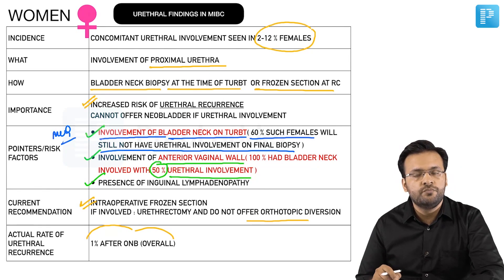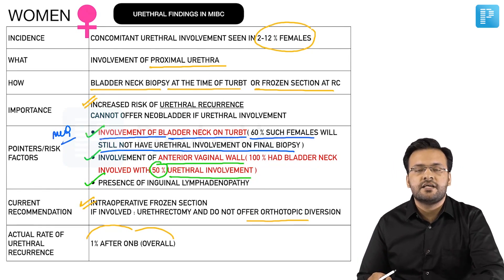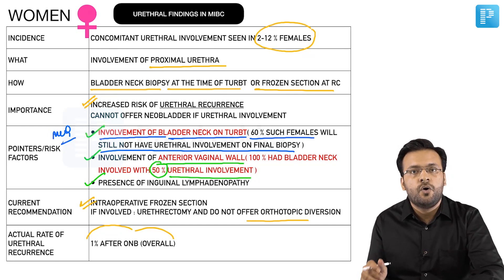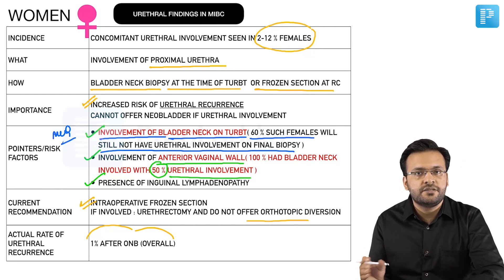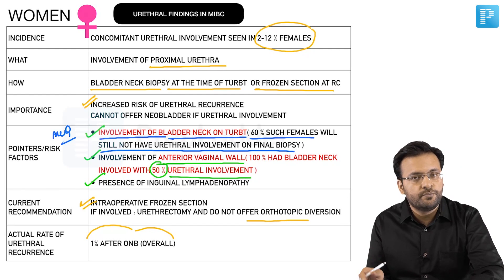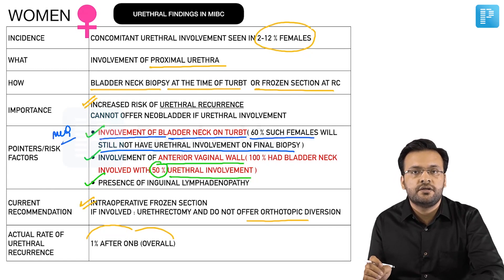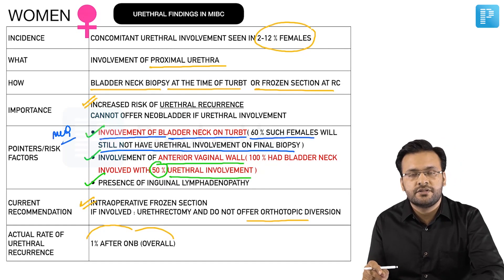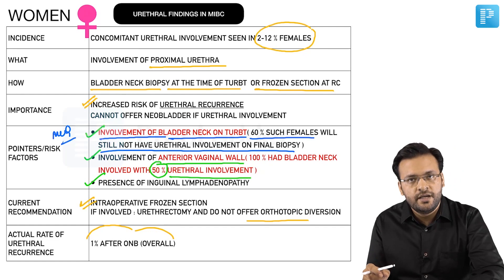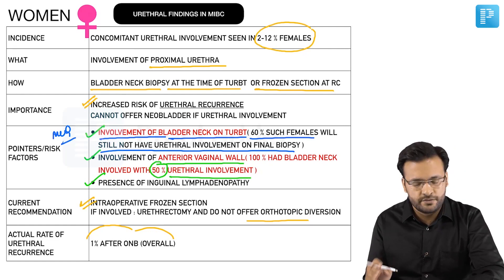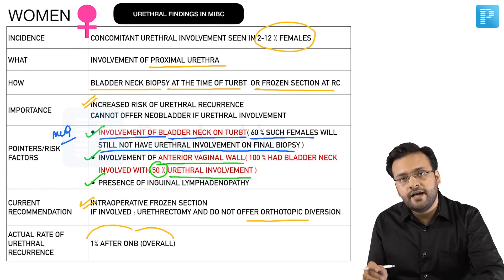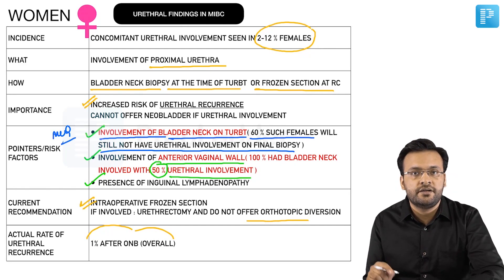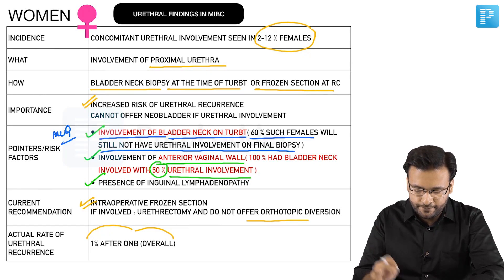Even in individuals in whom the urethra has been deemed high risk for recurrence — such as men with bladder neck involvement, multifocality, or CIS, or women with bladder neck tumor or anterior vaginal wall involvement — when comparing those who underwent orthotopic neobladder versus those who underwent ileal conduit diversion, patients at high risk of urethral recurrence who underwent orthotopic neobladder still had lower recurrences compared to those with conduit diversion. This is sometimes asked as an MCQ: orthotopic neobladder itself is a protective factor in reducing urethral recurrence after radical cystectomy.